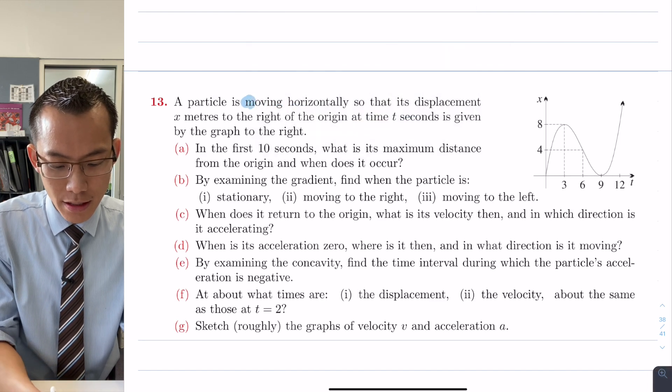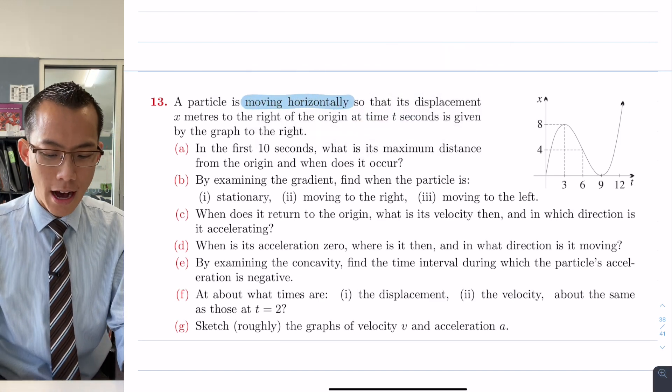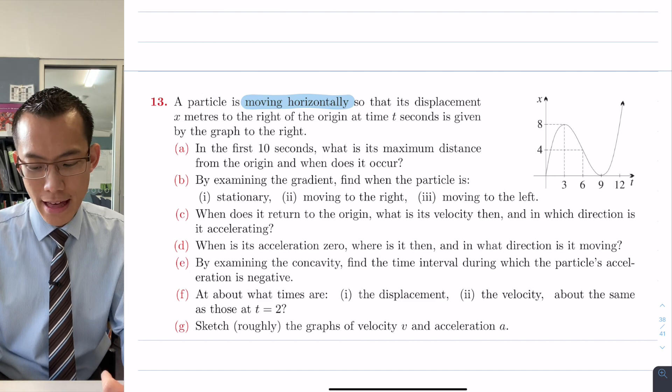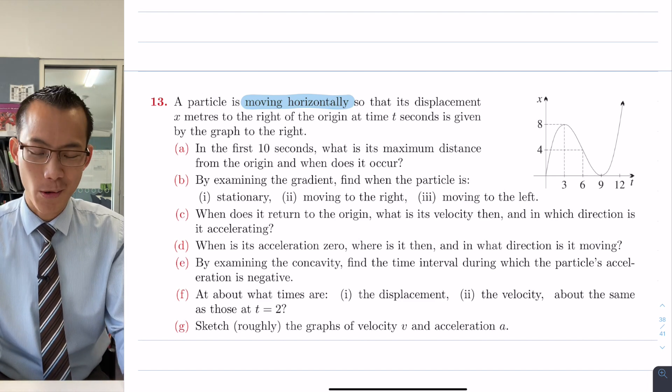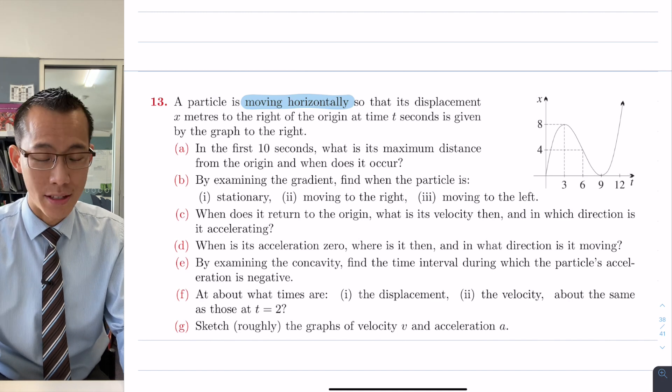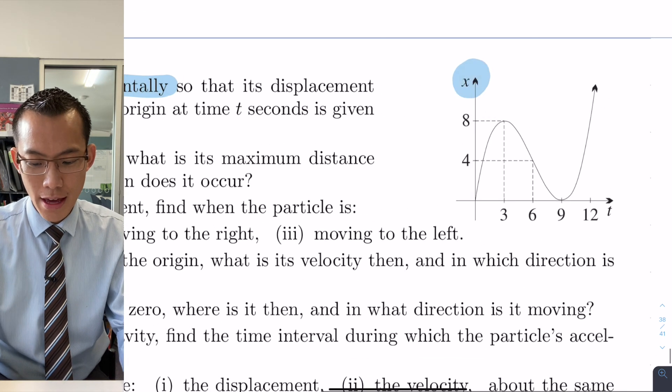Let's just change that, that's a bit easier to see. Moving horizontally and its displacement is given by x except for the fact that, and this happens all the time in displacement questions, x is on the vertical axis not the horizontal axis, so you can see it up there.